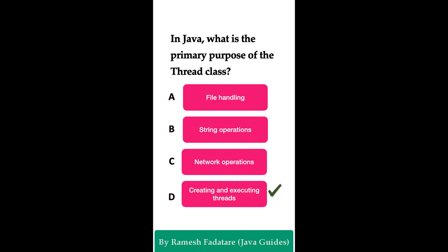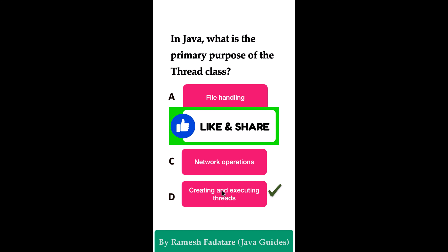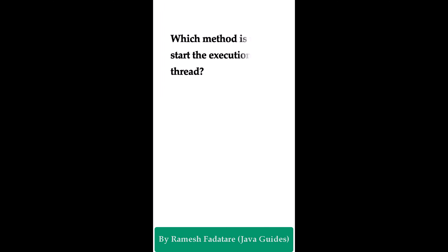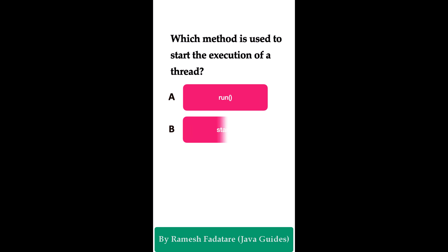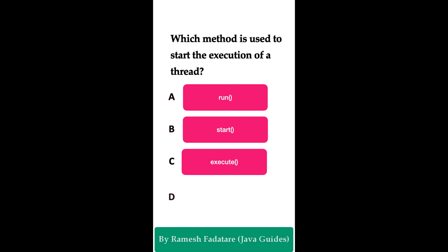What is the primary purpose of the Thread class in Java? Option A: file handling. Option B: string operations. Option C: network operations. Option D: creating and executing threads. The correct answer is option D. The Thread class is a fundamental class for multi-threading, representing a thread of execution in a program. Its primary purpose is to create and manage threads, allowing concurrent execution of multiple parts of the program. Which method is used to start the execution of a thread? Option A: run(). Option B: start(). Option C: execute(). Option D: go().